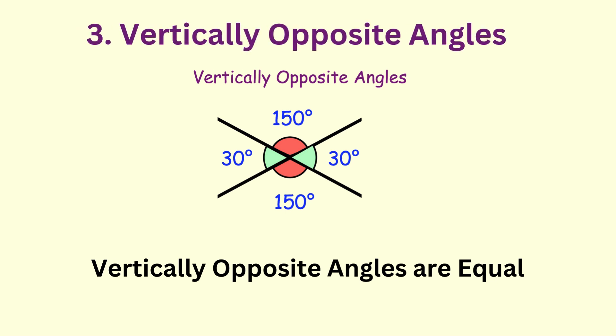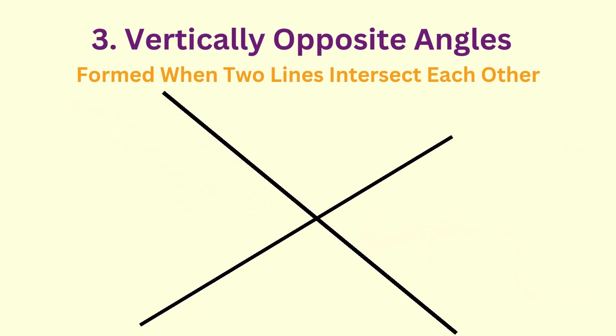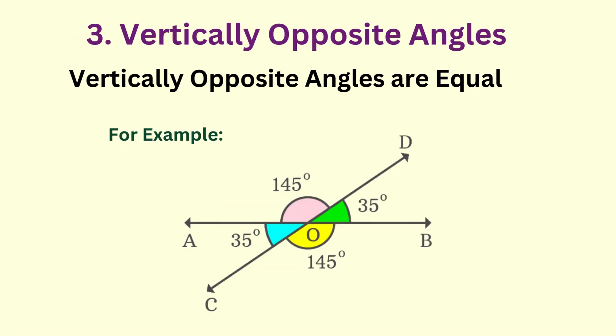Vertical angles are formed when two lines meet each other at a point. They are always equal to each other. In other words, whenever two lines cross or intersect each other, four angles are formed. We can observe that the two angles that are opposite to each other are equal and they are called vertical angles. They are also referred to as vertically opposite angles as they lie opposite to each other.